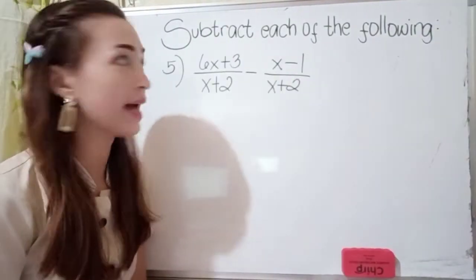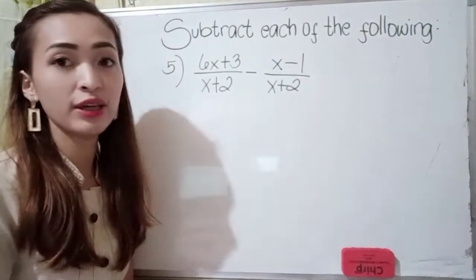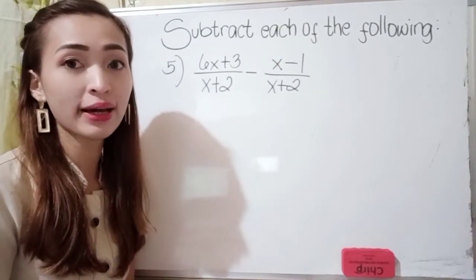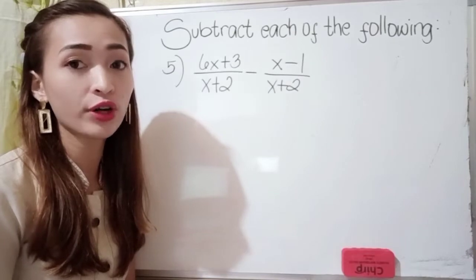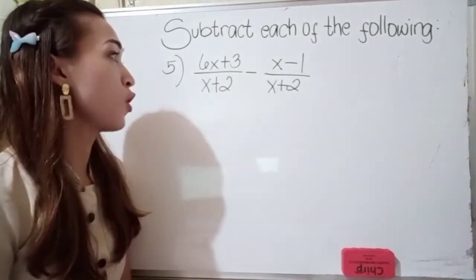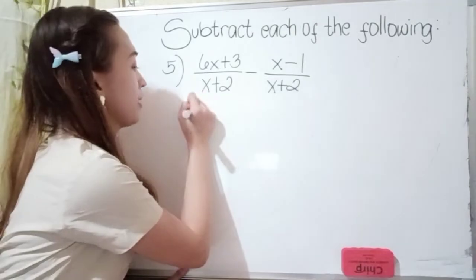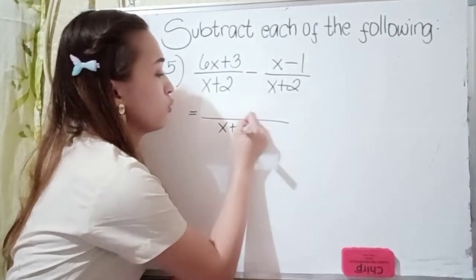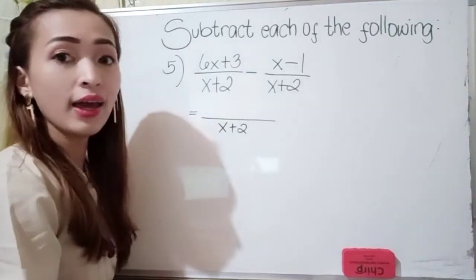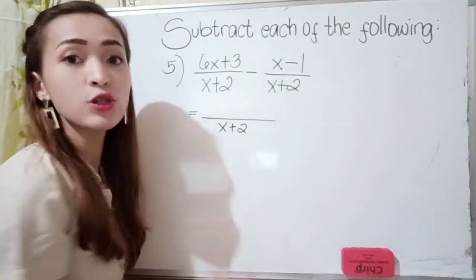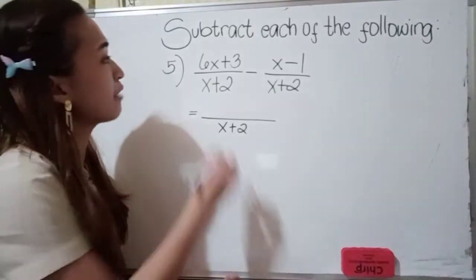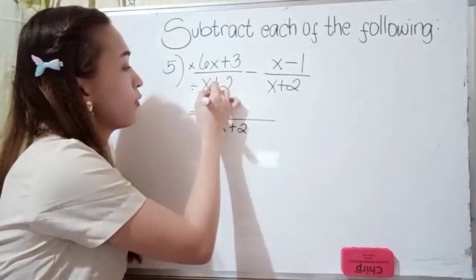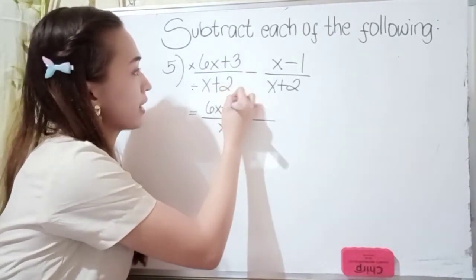Okay, for our last example, number 5, we have 6x plus 3 over x plus 2 minus x minus 1 over x plus 2. So again, they have the same denominator, so just write x plus 2. Okay, next is x plus 2 divided by x plus 2 is 1, so 1 times 6x plus 3. So we have 6x plus 3.